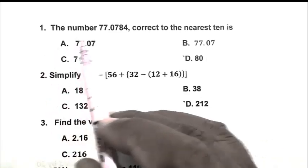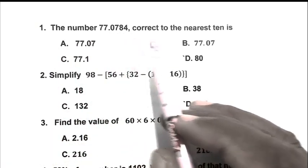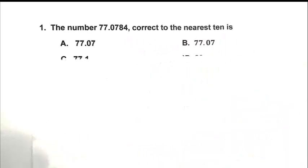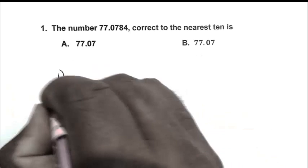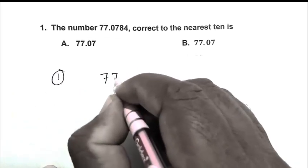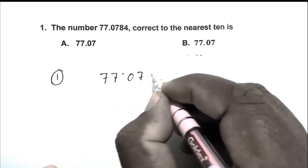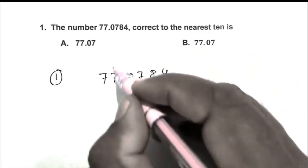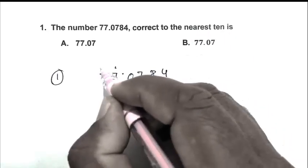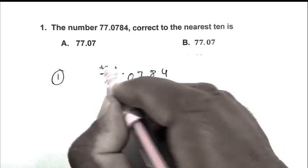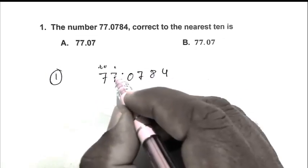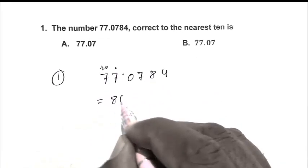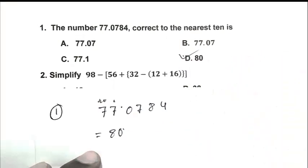Question number 1. The number 77.0784 correct to the nearest 10 is. So friend, the number is 77.0784. We have to calculate nearest 10. So here is once 10. So friend, this number is greater than 5. So my answer is 80. So D is the right answer.